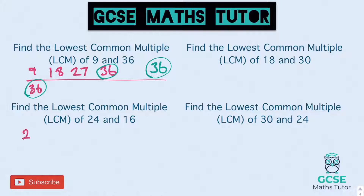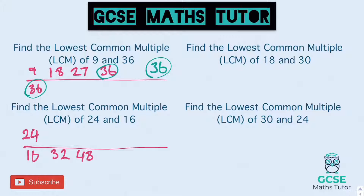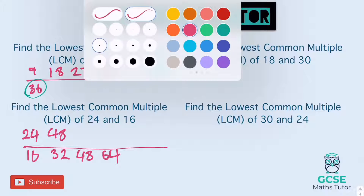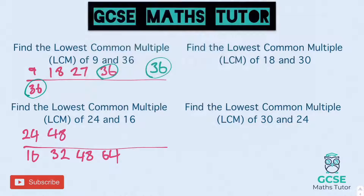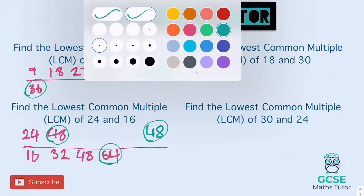On to 24 and 16. Let's start with 16: 32, 48. And then onto 24: 24, 48 — and there we go, straight away. So 48 is our lowest common multiple. They don't always appear straight away, as we'll probably see on the next one.